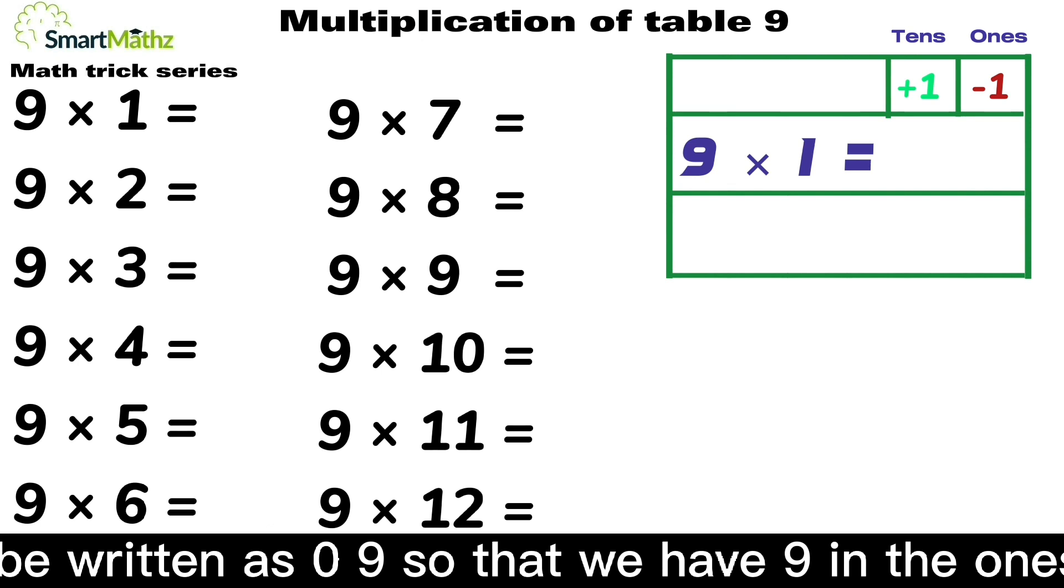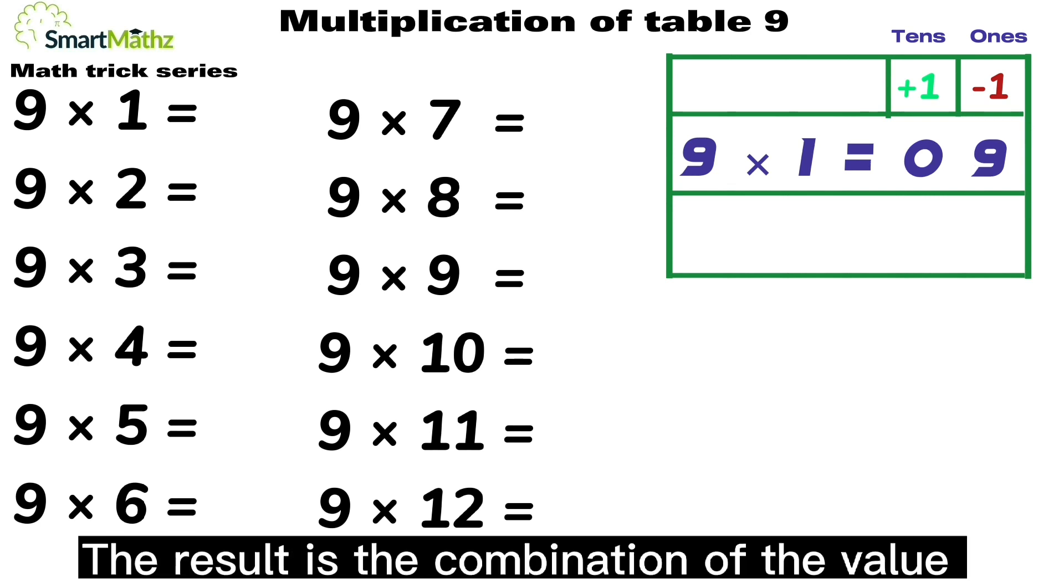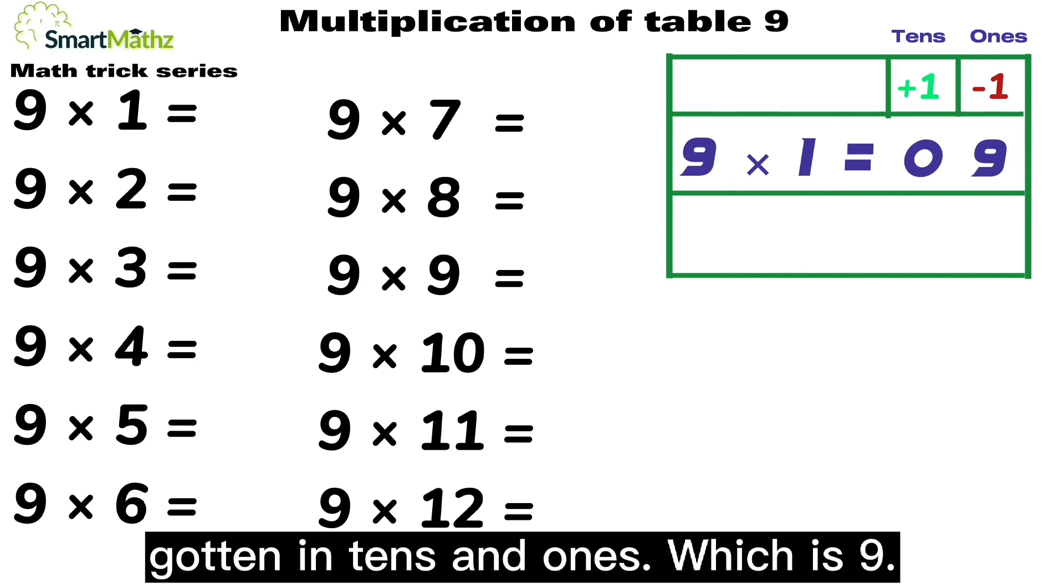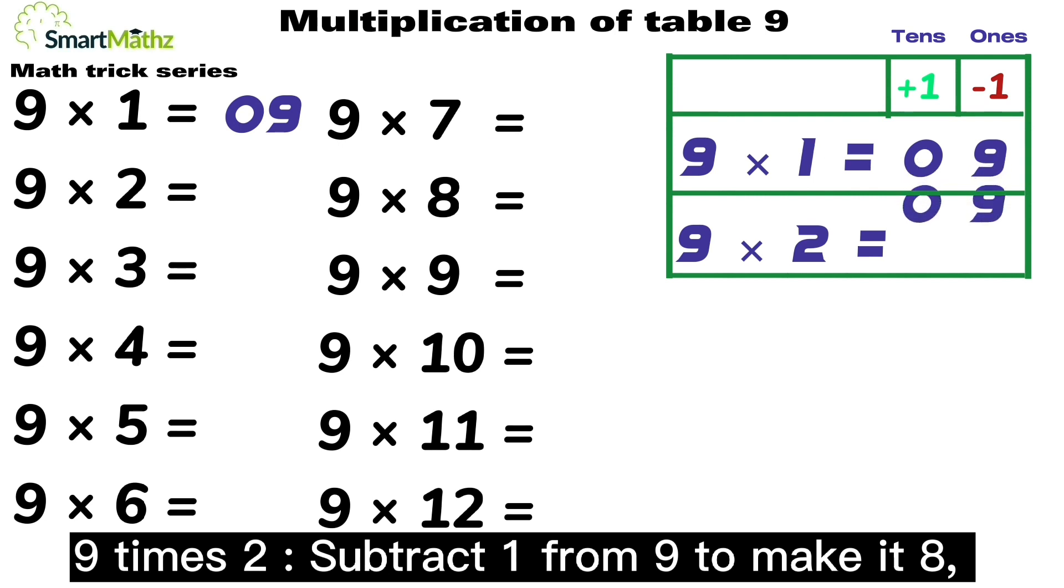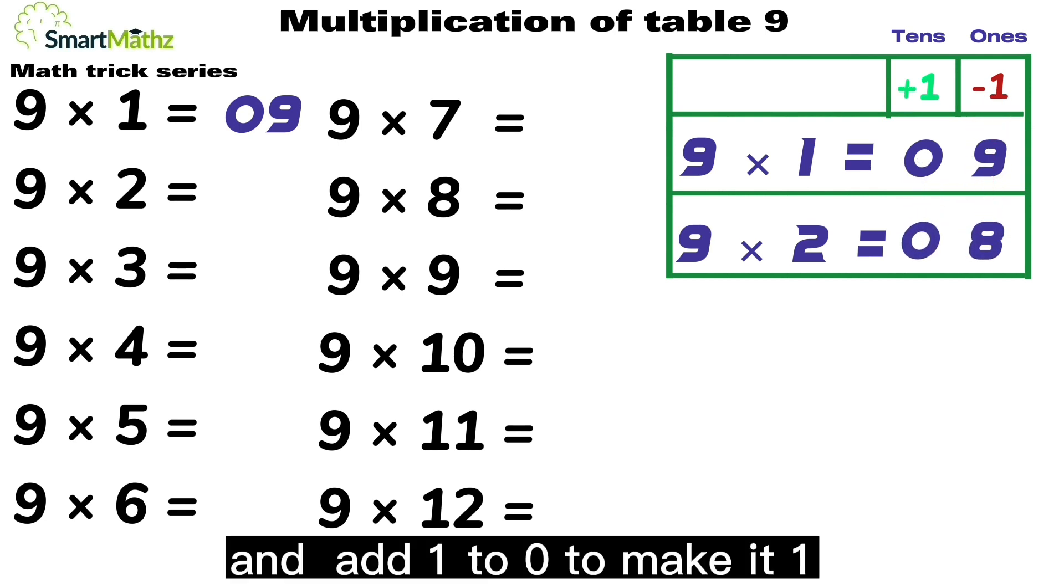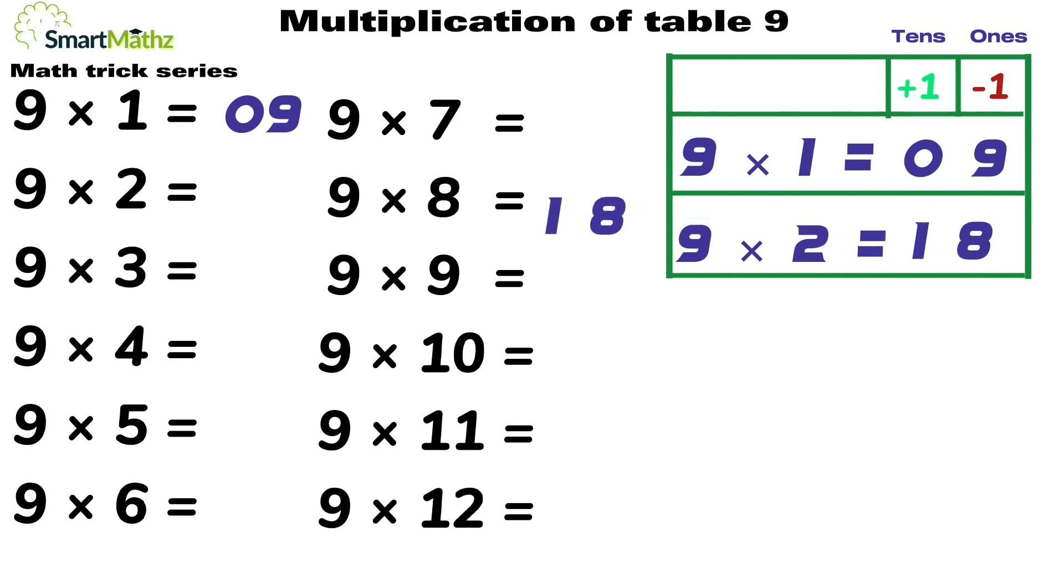9 times 1 equals 9, which can also be written as 09, so that we have 9 in the ones place and 0 in the tens place to be able to use our trick. The result is the combination of the value gotten in tens and ones, which is 9. 9 times 2, subtract 1 from 9 to make it 8, and add 1 to 0 to make it 1. The result is 18.